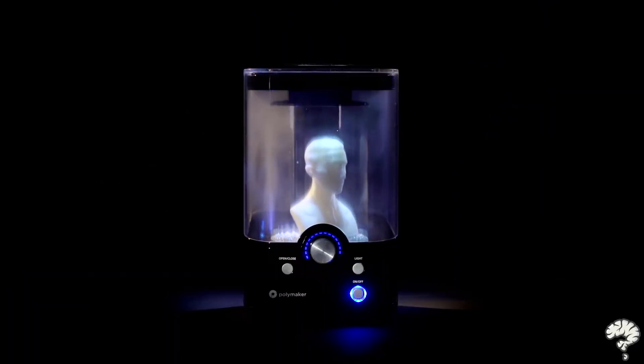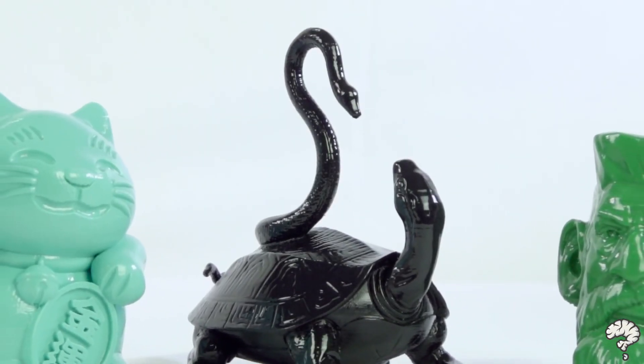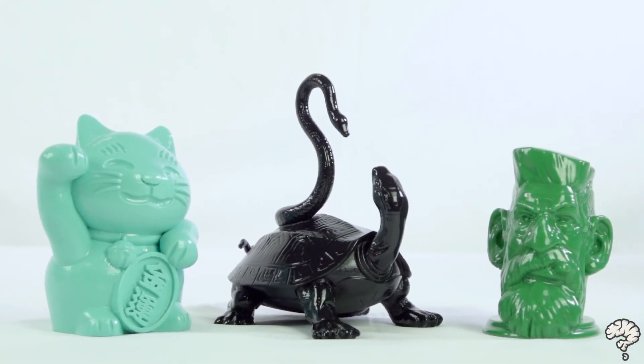PolySmooth is easy to work with and prints very well. You can get fine details with good interlayer adhesion. PolySmooth support is also very easy to remove and once polished, there is no scar left on the surface.